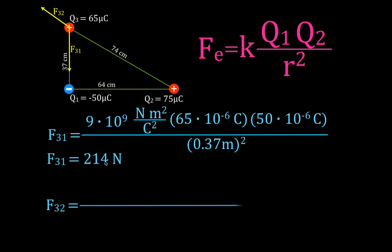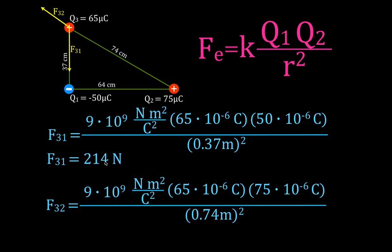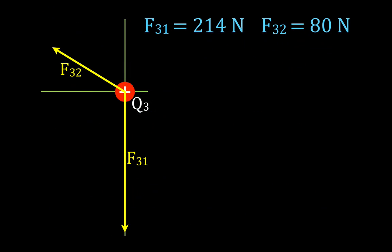All right, now let's do the same thing for three, two, the force on three from two. Again, Coulomb's law, Coulomb's constant. Again, F3, 65 microcoulombs. This time, F2 is 75 microcoulombs, and the distance between them squared, and you get that the force on three from two is 80 newtons. Okay, so now we know the direction and the magnitude of those two forces.